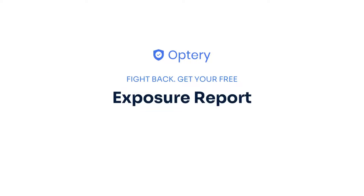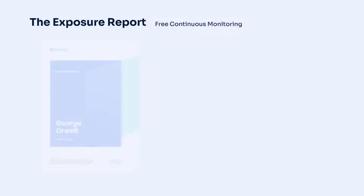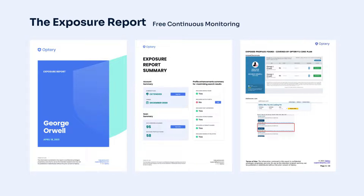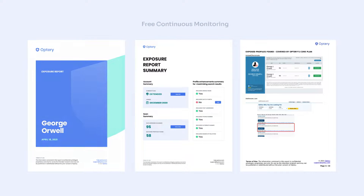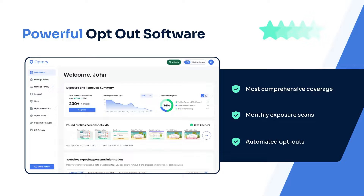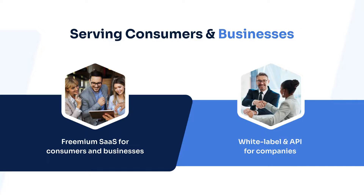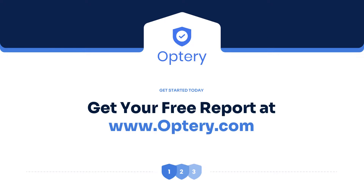That is why Optary offers the free exposure report. The exposure report shows screenshots from sites that have your data, with links to let you see that data right on the site. Use the exposure report and our how-to guides to opt yourself out for free, or sign up for an Optary paid plan and Optary will handle the monitoring and removals for you and your family members. Bonus tip: if you're a business owner worried about the security of your employees, we also have Optary for Business. Go to Optary.com to sign up for your free exposure report.